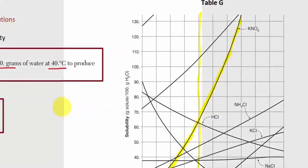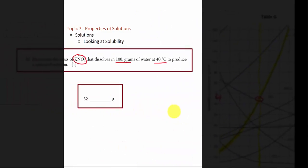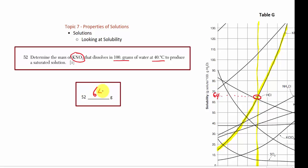Bringing in table G, I've highlighted the 40 degrees mark and the KNO3 line. The intersection point is right there. Tracing across and reading the graph, you're given a little latitude because we're estimating between 60 and 70. I would estimate this to be about 64 grams. You'd be given latitude here because we're reading a graph and not everyone will read it exactly the same way.